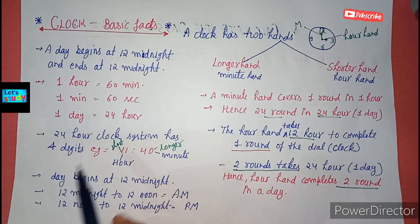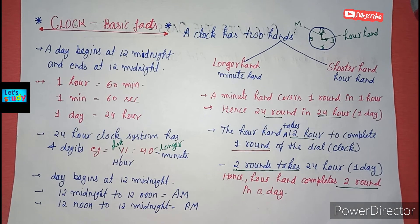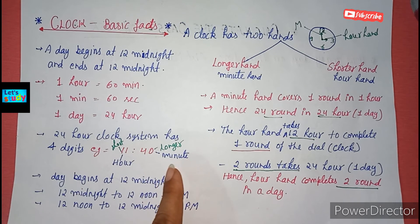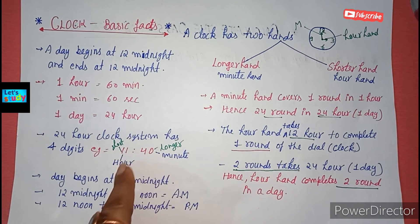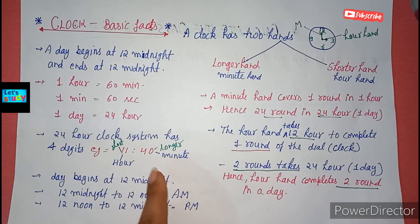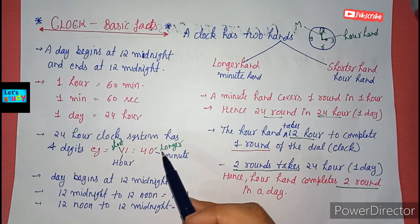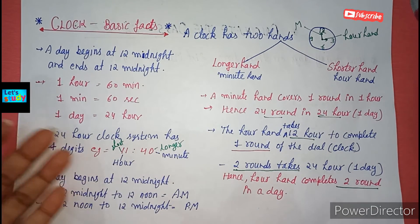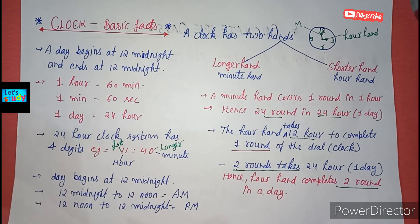The 24-hour clock system has a four-digit system. There will be four digits — the first two digits will show the hour and the second two digits will show the minute. The minute hand is the longer hand and the hour hand is the shorter hand.